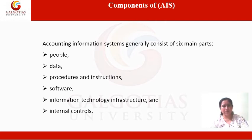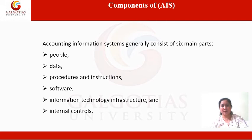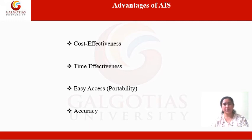Last but not least, an important component of the accounting information system is internal control. Internal controls are the basic need of every business organization. These are tools, checks, procedures, and systems adopted by an organization to ensure the integrity of financial information, prevention of frauds and errors, safeguarding of assets, etc.